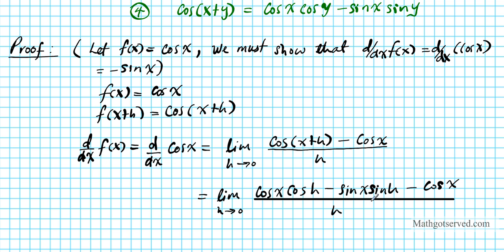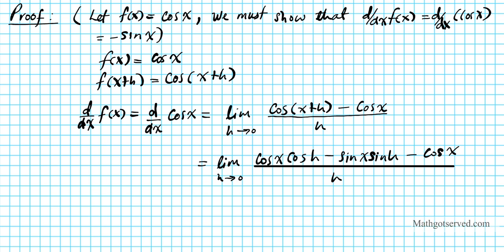Now what I'm going to do is migrate some terms. I'm going to move this term over. So it's going to become the limit as h approaches 0 of cosine x cosine h minus cosine x minus sine x sine h, and then this whole thing divided by h.